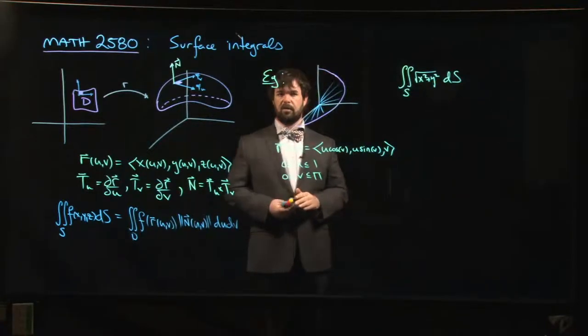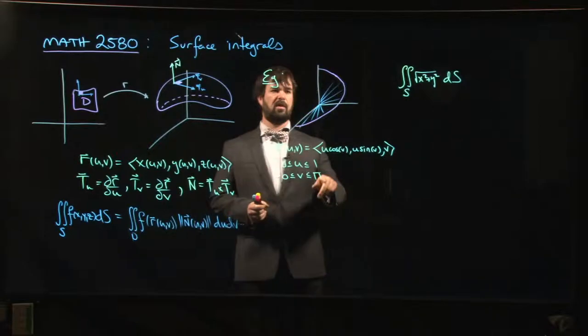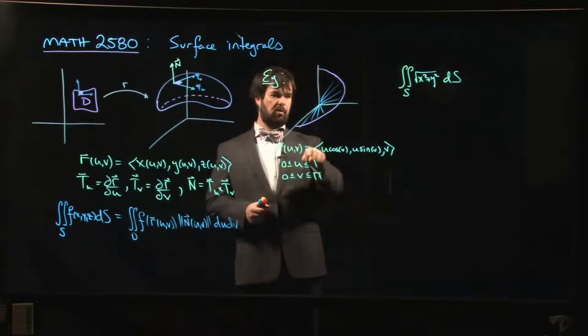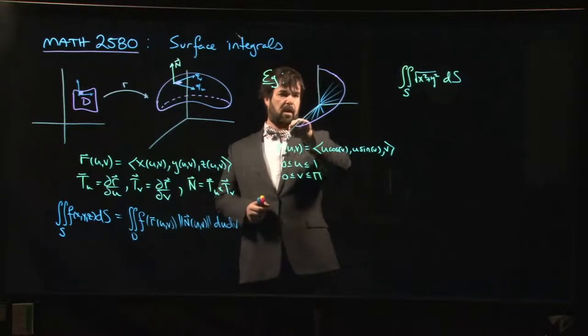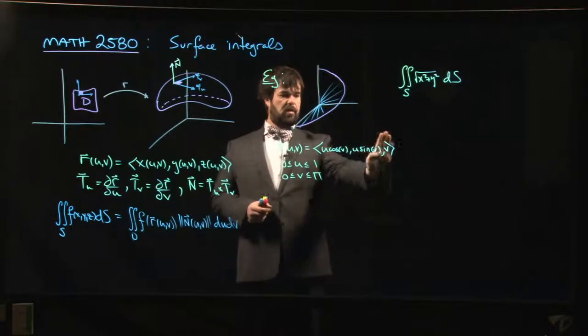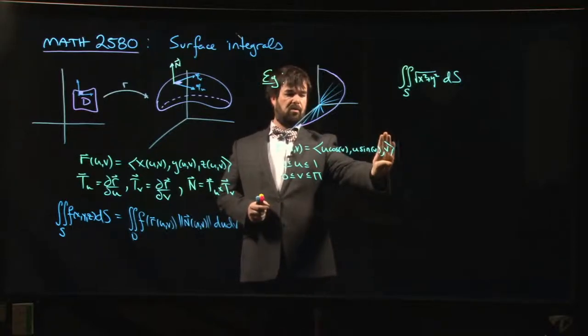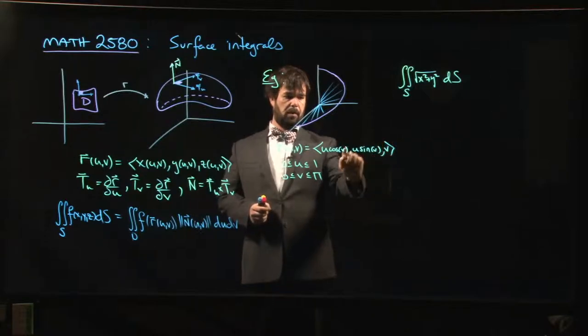And the surface is going to be this spiral ramp, which I've done a bad job of drawing here. So it spirals up. If you ignore the z-coordinate, these would simply be polar coordinates for a disk, right? But what happens is as theta increases, you also increase z.